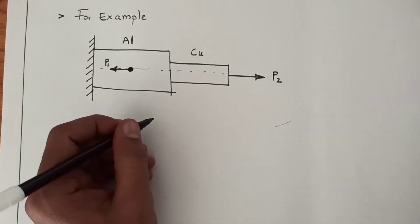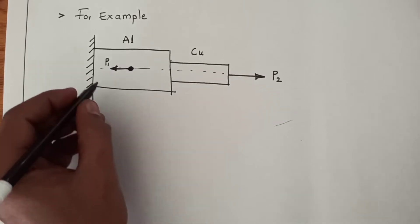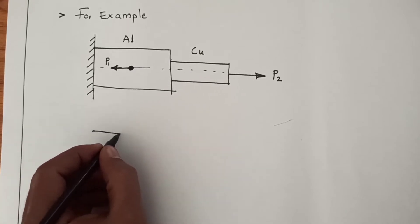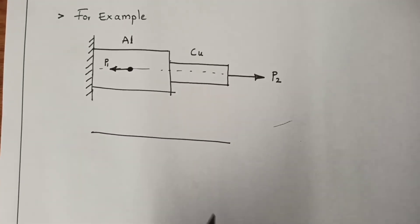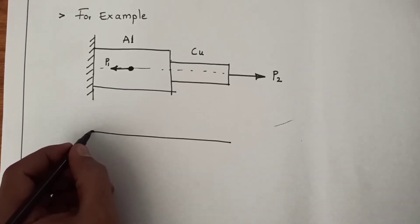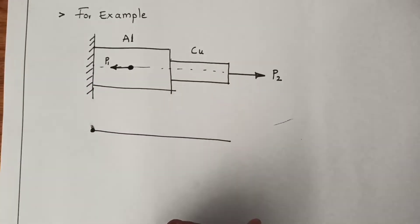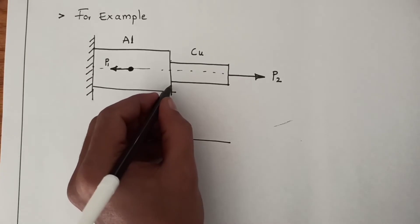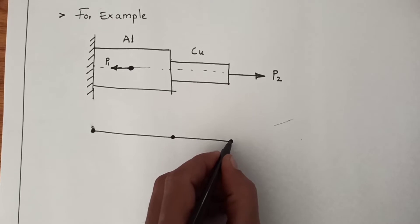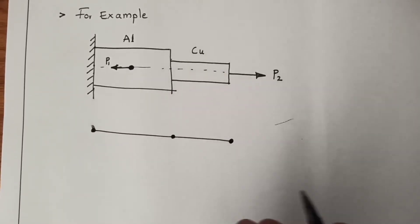So in this case how do you represent the nodes? Now first you have to discretize this element. In a line diagram we will be making. So here there will be one node at the fixed point and there will be another node generally here, and third node will be at the end. So how do you divide it, on what basis?